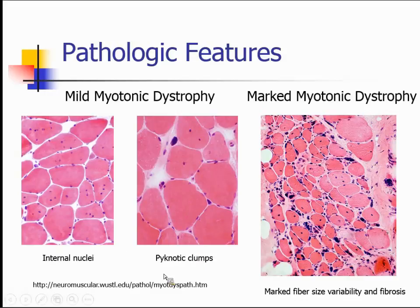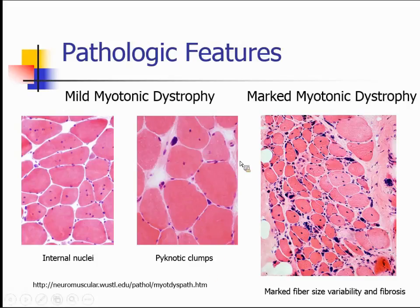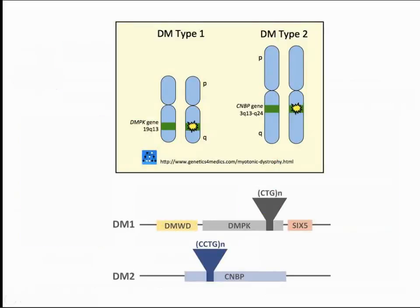But sometimes you can see a more helpful feature — bags of nuclear material separate from the muscle fibers, called either nuclear bags or pycnotic clumps. You can also see them in neurogenic disorders like chronic neurogenic injury, so they're not specific, but if you saw them in a suspected myopathy it would make you think the patient might have myotonic dystrophy. In patients with more severe disease, over time much of the muscle gets replaced by fibrous connective tissue, with more fiber size variability and a more dystrophic appearance.